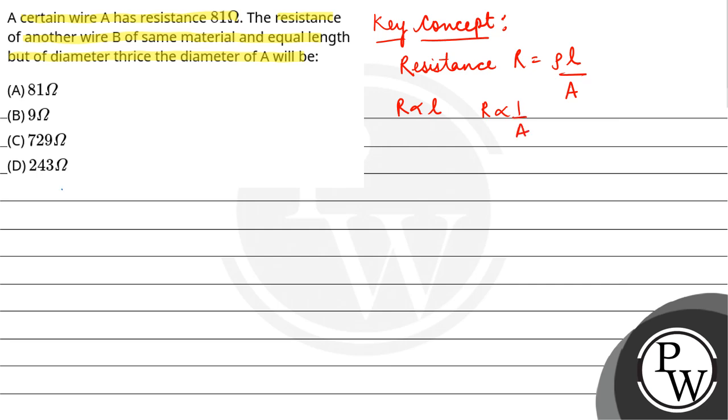Now according to the question, wire A has resistance 81 ohm. R A is equal to rho L by A.